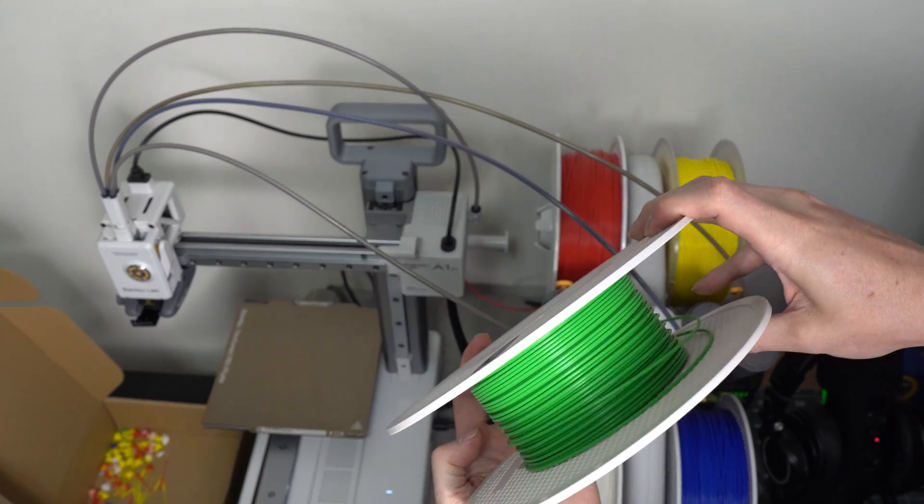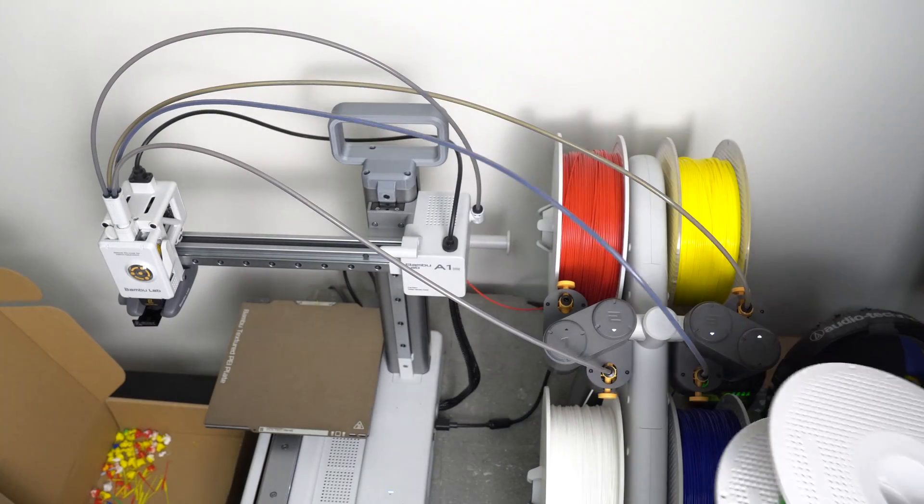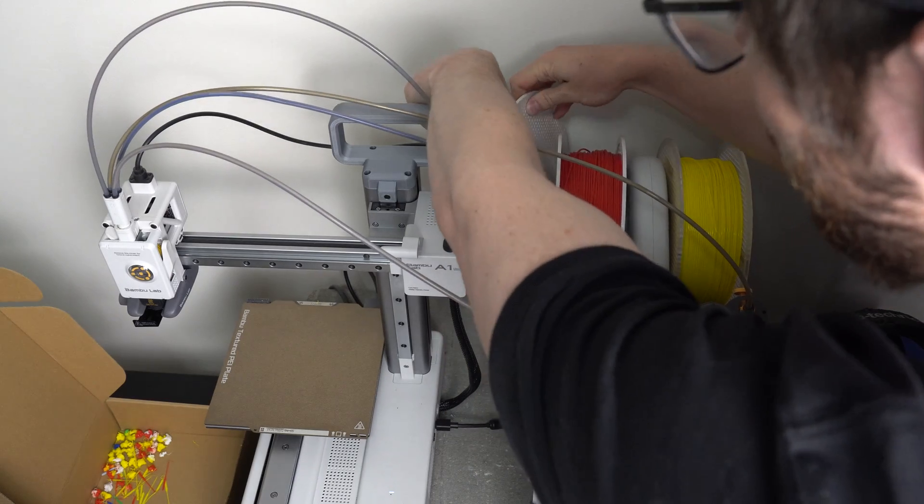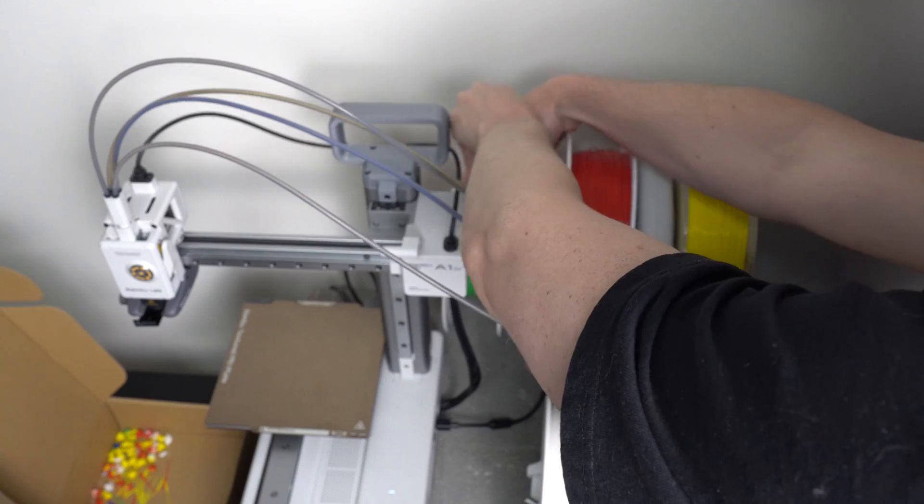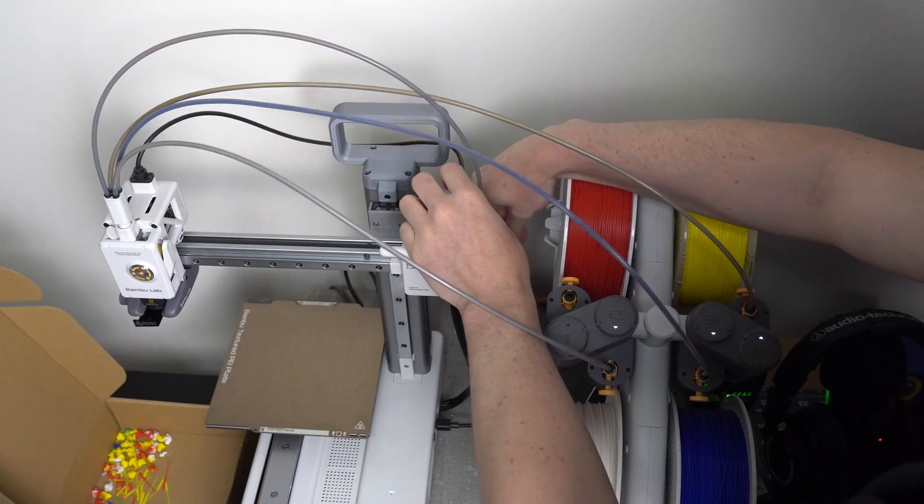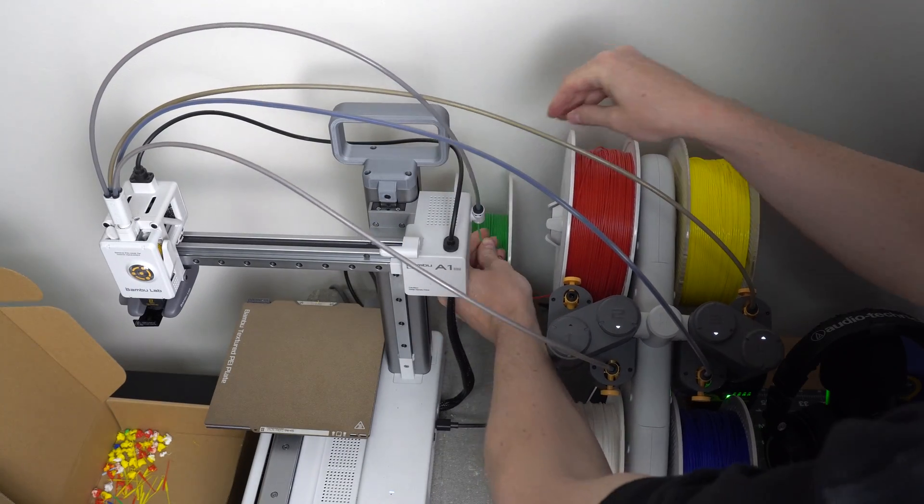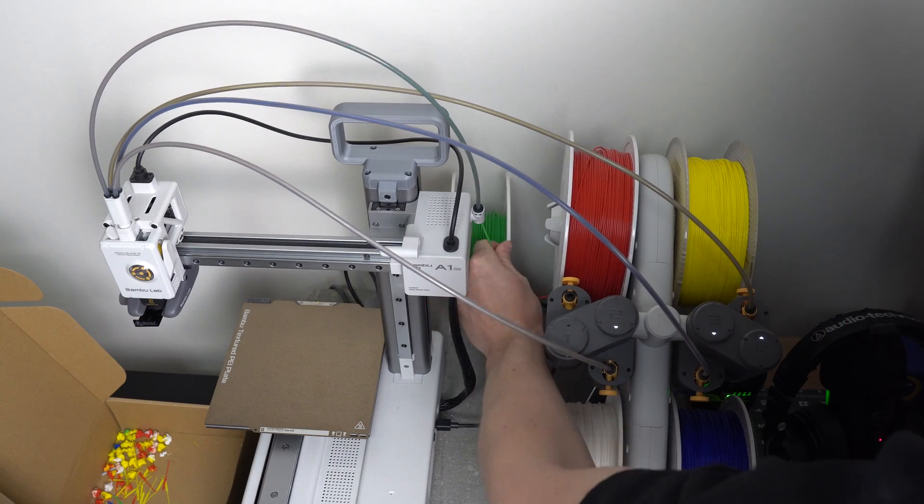Now we can mount our external spool of filament, in this case this green PLA, and then feed it up into that tube.